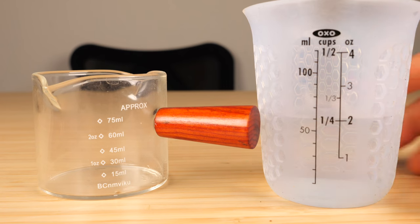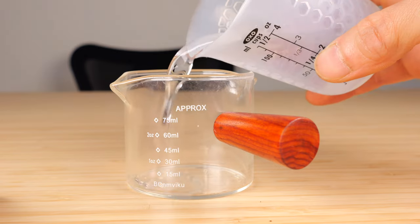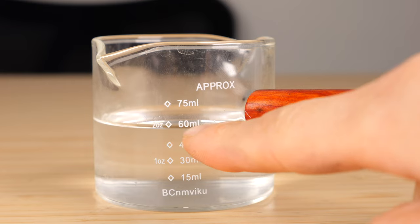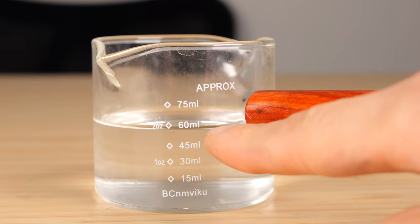I got two ounces of water on this OXO measuring cup. Put that in here, see where it lands. It doesn't actually have lines for the two ounce mark, but it has these diamonds there. It looks like it's touching it right there.